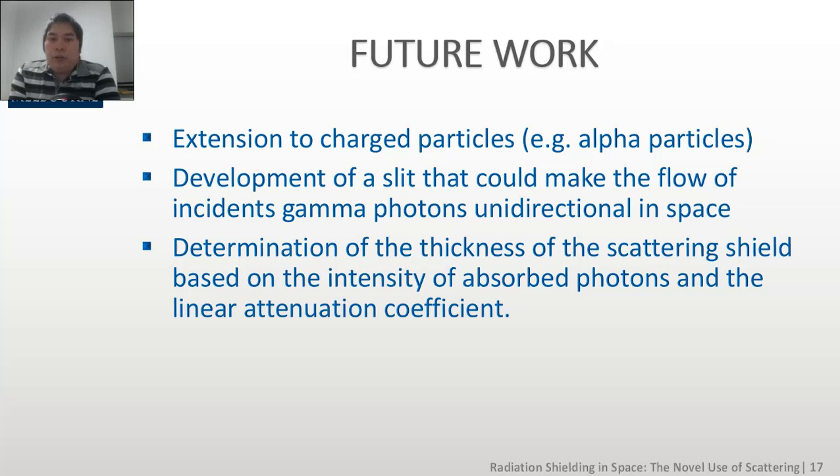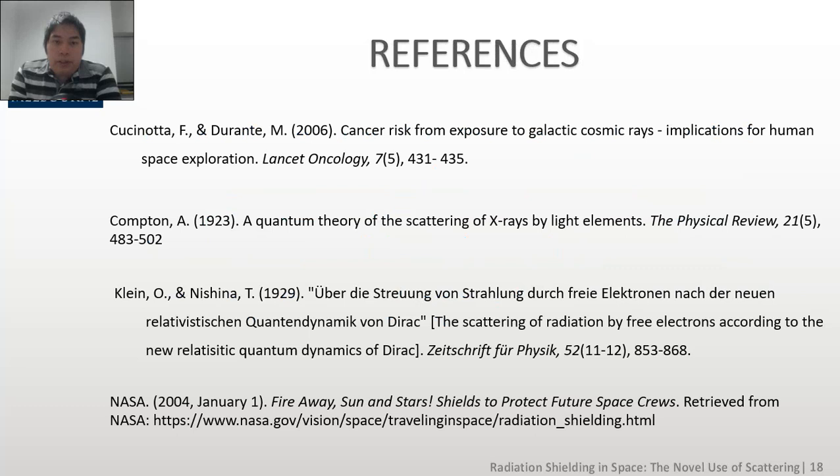Second, it could also be beneficial to develop a slit that could make the flow of incident photons unidirectional. This means, in this research, we assume that the gamma rays will flow only in one direction. And third, we need to also determine the thickness of the scattering shield based on the intensity of the photon absorbed and the linear attenuation coefficient of the material.